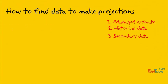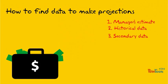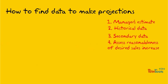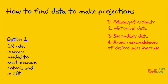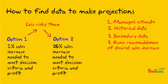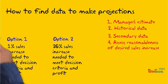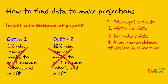How do you approach a situation where you have no data to base a projection on? One thing you might want to do is calculate the minimum increase in sales you need to meet your decision criteria and return a profit, then consider how realistic it is to achieve that sales increase. For example, a 1% increase in sales is much less risky than an option requiring a 26% increase. Even without a projection, you can gain insight into how likely your option is to pay off.